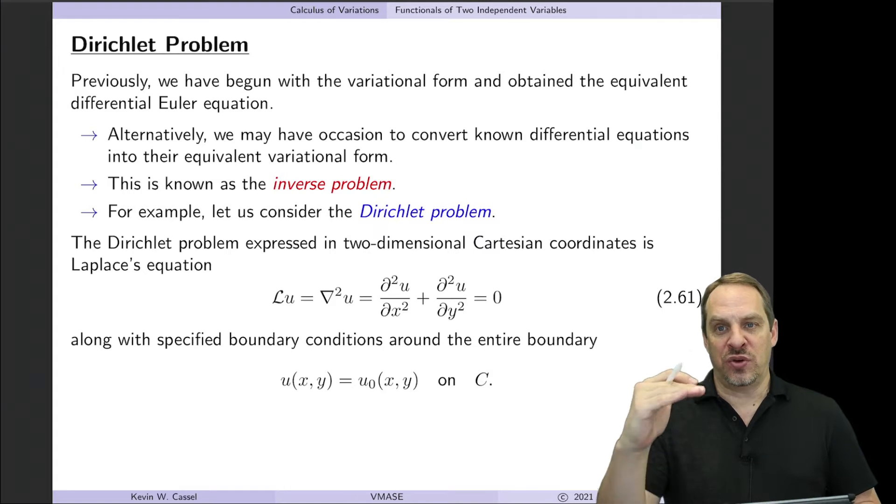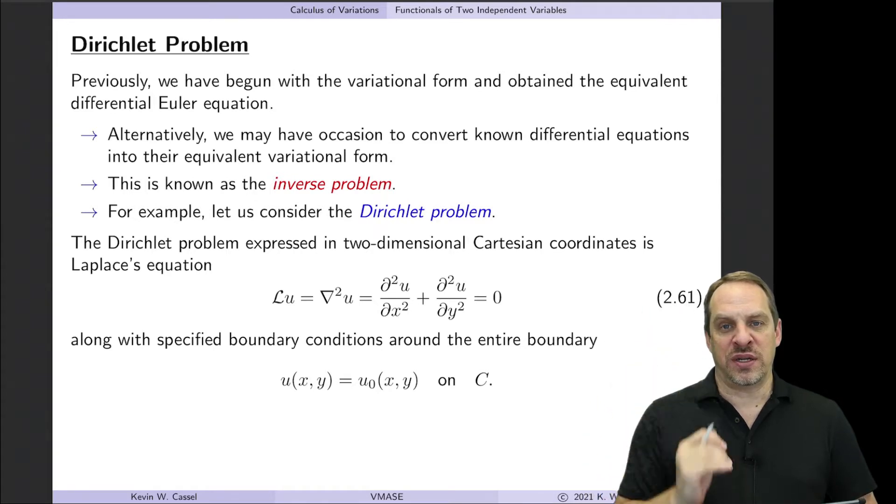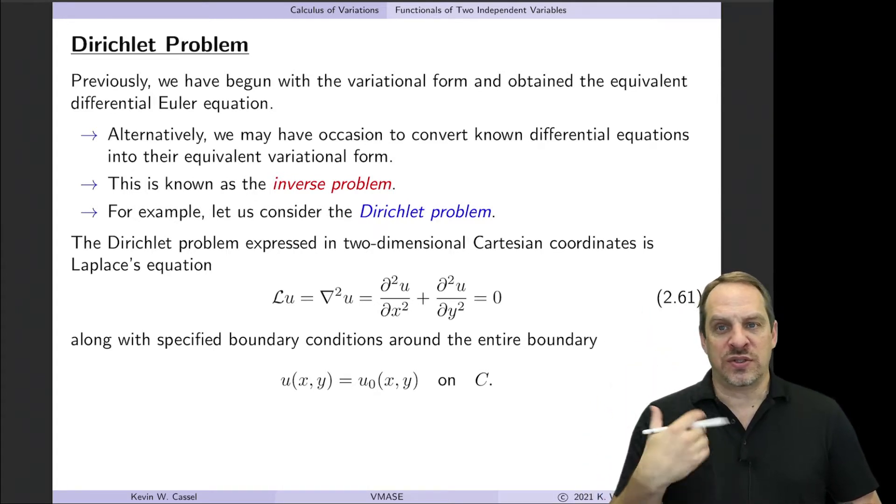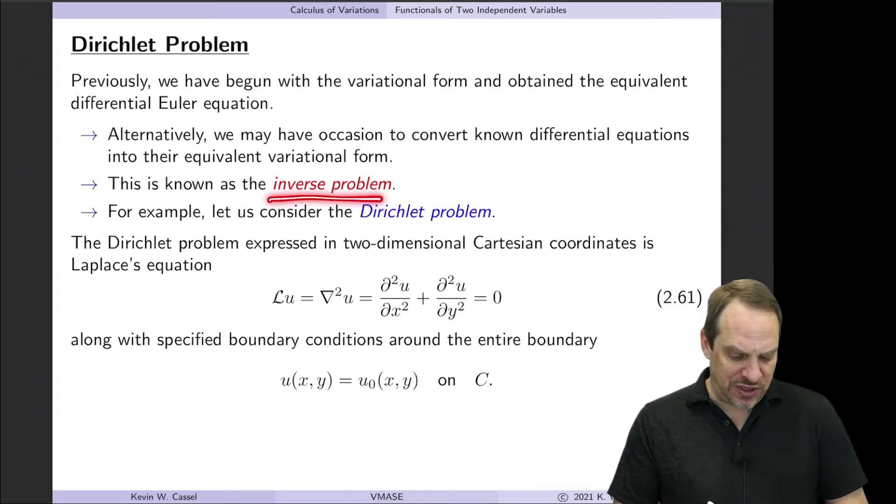We're going to look at a case where we know the governing differential equation, in this case Laplace's equation. We want to go backwards to get the corresponding variational form. This is commonly done in finite element methods, where you go from the so-called strong form, the differential form, to the weak form, which is the variational form.